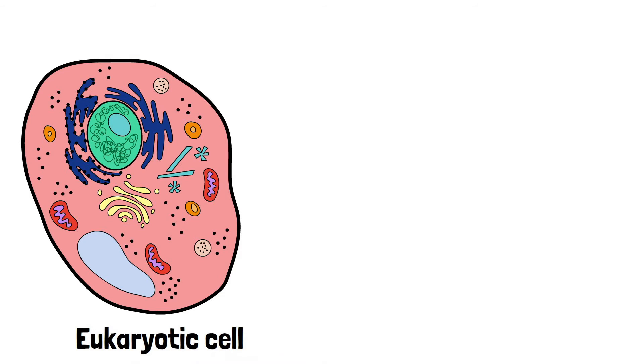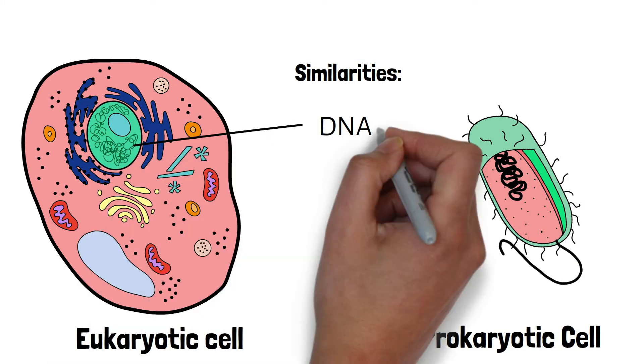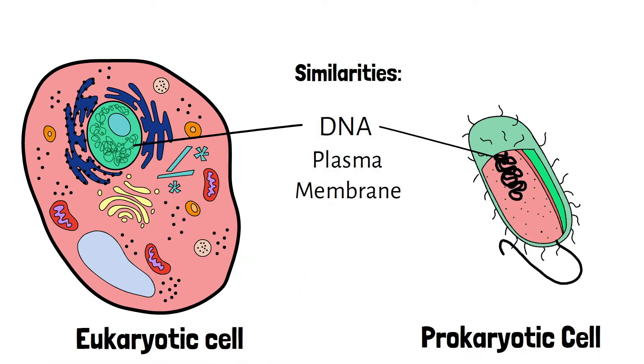Now, before getting into the differences, let's talk about some of the similarities between eukaryotic cell and prokaryotic cell. Both eukaryotes and prokaryotes have genetic material in the form of DNA. They also have the same outer layer called the plasma membrane.